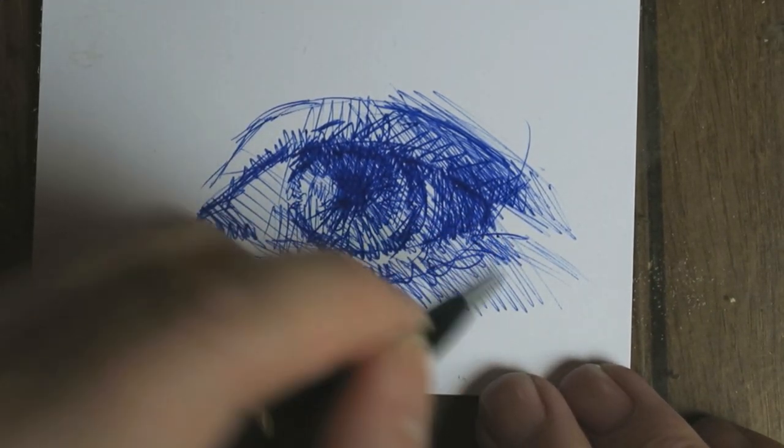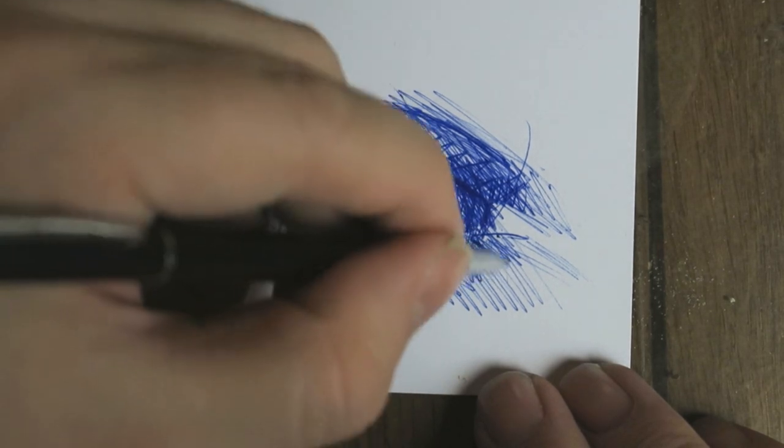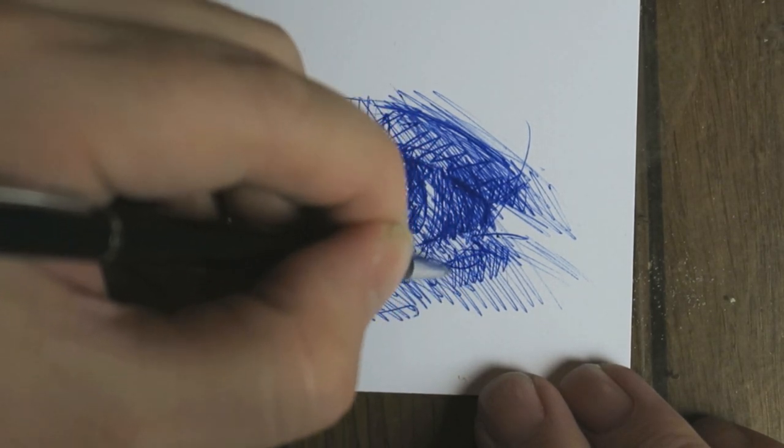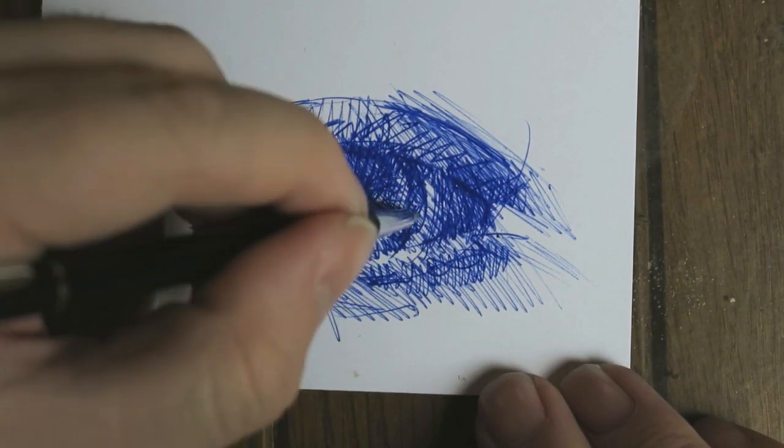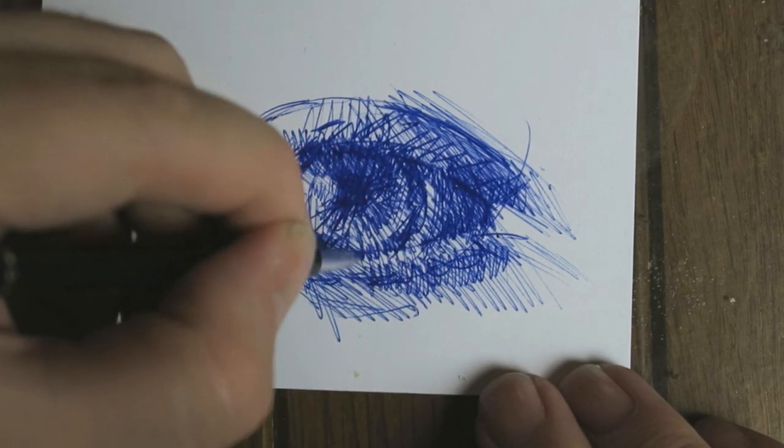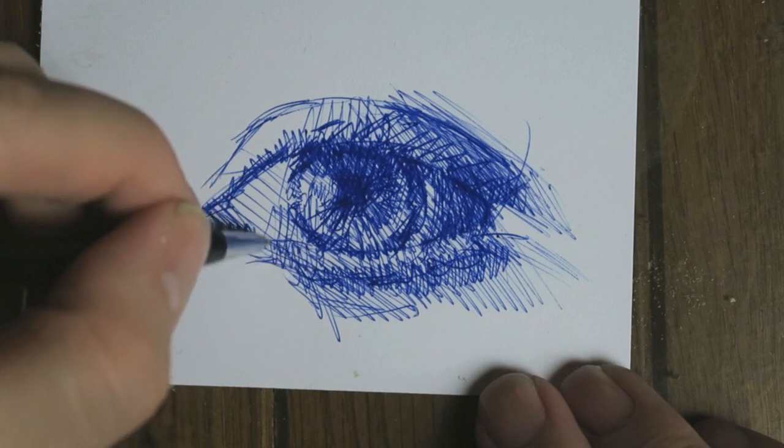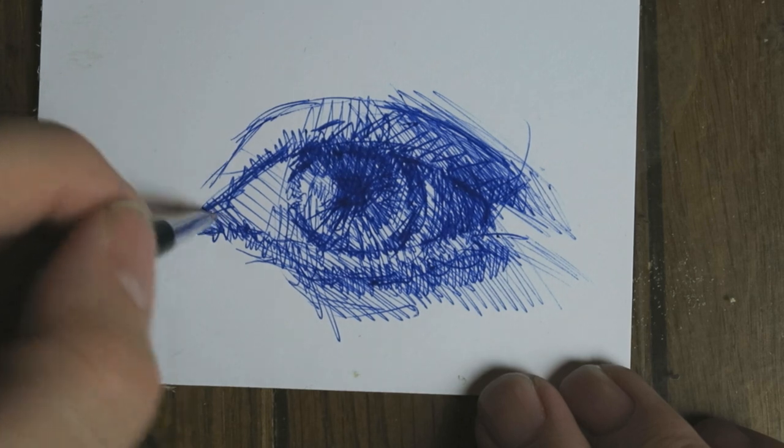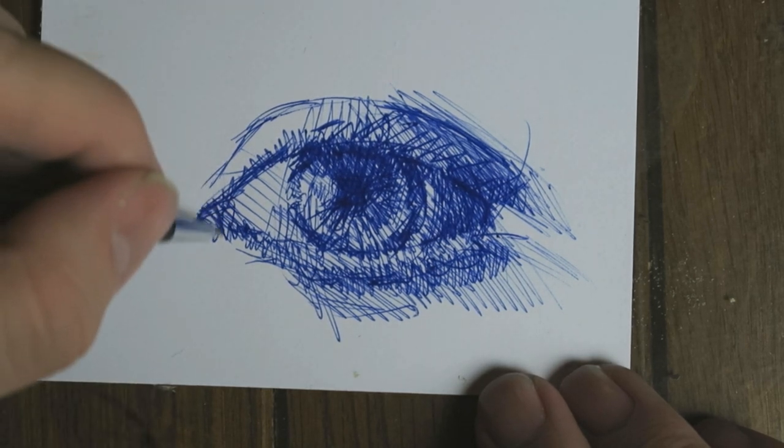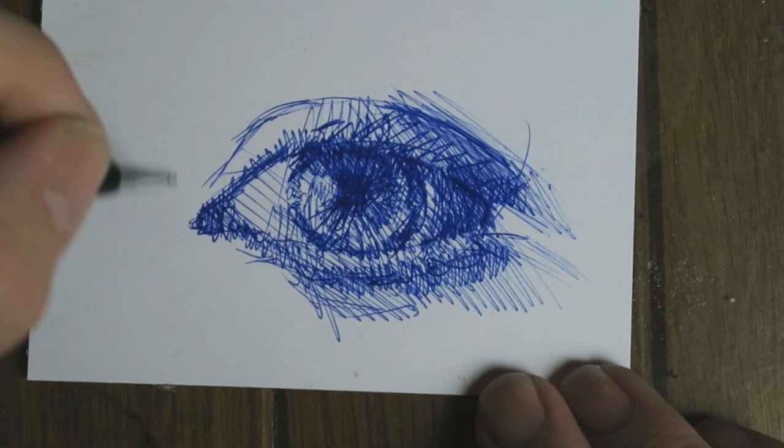Adding a little bit of tonal value to define the tonal values of the skin a little bit around it. If you don't do that, the eye is so isolated on the paper that it doesn't seem natural perhaps. So I add a little bit of context.